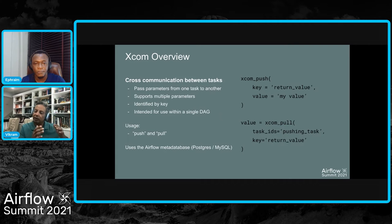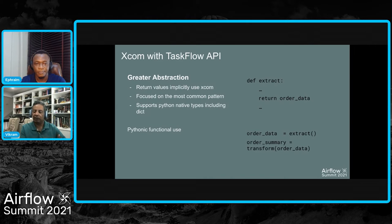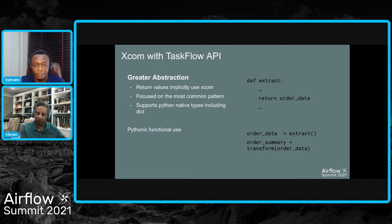This is the general usage mechanism in Airflow all the way through Airflow 2.0. In Airflow 2.0, with the introduction of the Taskflow API, it introduced a higher level of abstraction, primarily for simple use cases when you're returning data from a prior task and wanting to pass it to a succeeding task. In this model, XCOM is used implicitly so the DAG author doesn't need to focus on transferring data. This is done through support of native Python data types including, for example, a dictionary, and fits naturally with functional programming.